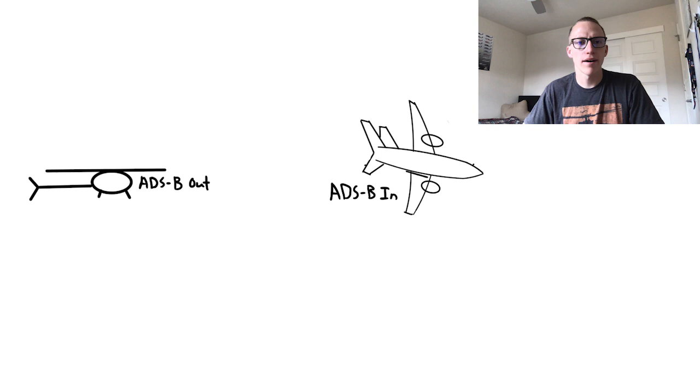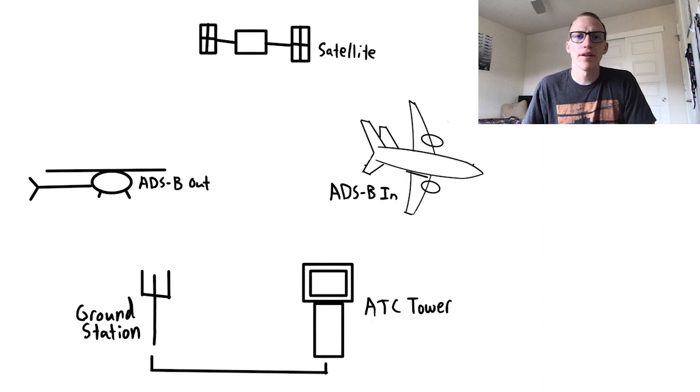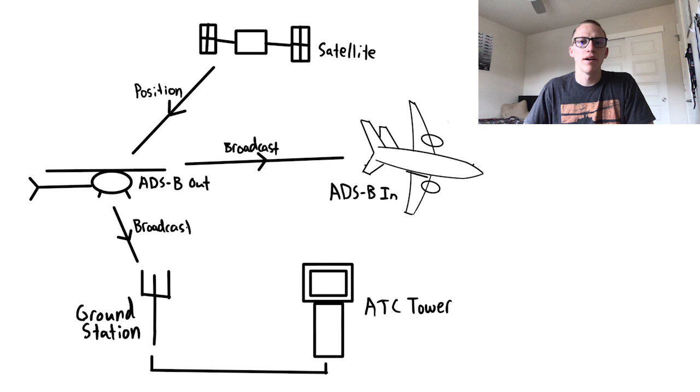So let's take a look at an example system using ADS-B. We'll have a helicopter with only ADS-B out, an airplane with only ADS-B in, a satellite, an ATC tower, and an ATC ground station. The D in ADS-B was dependent, and the helicopter with ADS-B will depend on our satellite for position information. The B in ADS-B was broadcast, and the helicopter will broadcast its position from both air-to-air and air-to-ground. The ATC ground station receives the air-to-ground signal, which is relayed to the ATC tower. The controller can now see the aircraft's position.